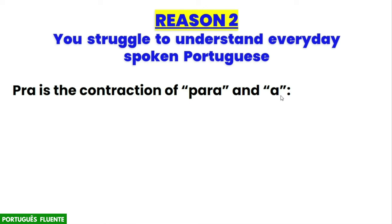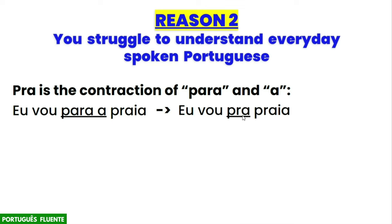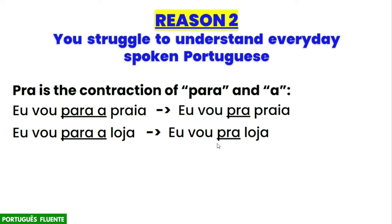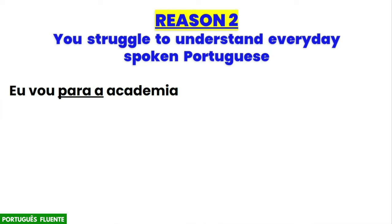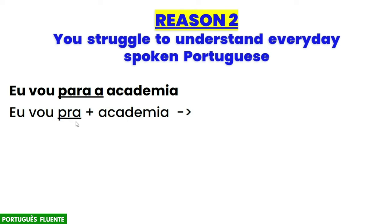For example: 'Eu vou para a praia' — I go to the beach — becomes 'Eu vou pra praia.' And 'Eu vou para a loja' — I go to the store — becomes 'Eu vou pra loja.' So 'para a' contracts to 'pra' in natural spoken Portuguese.